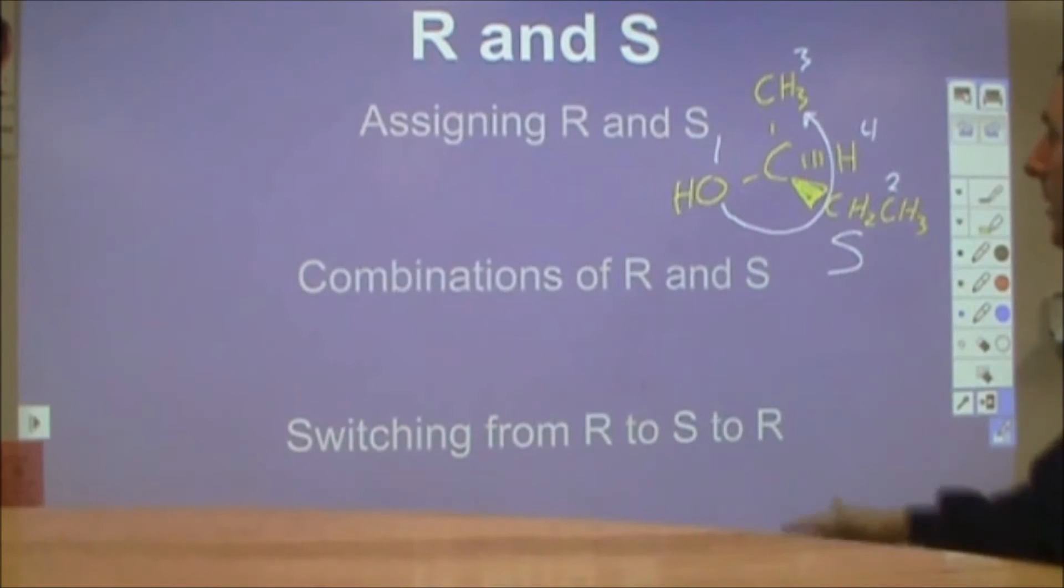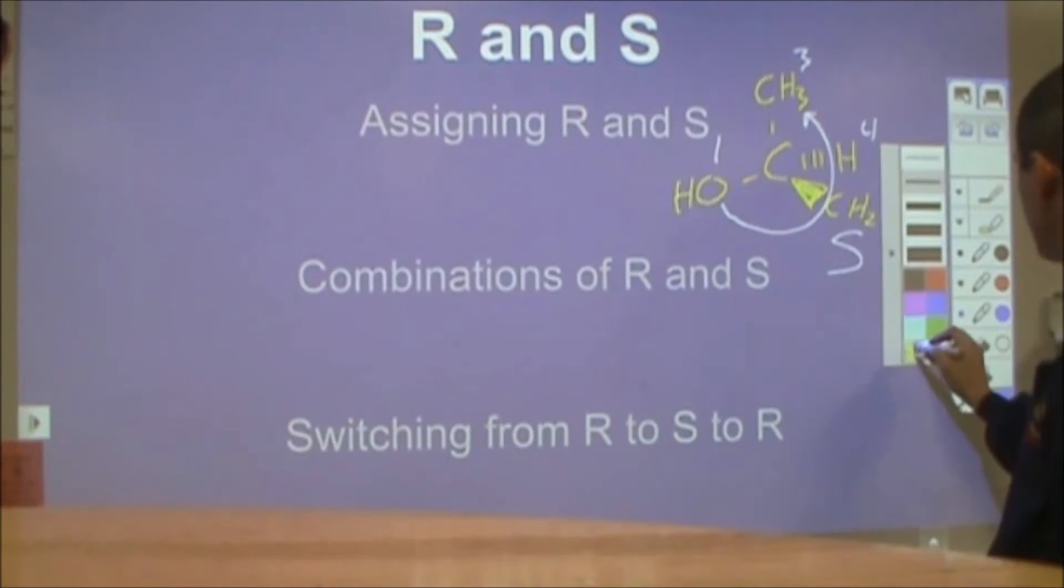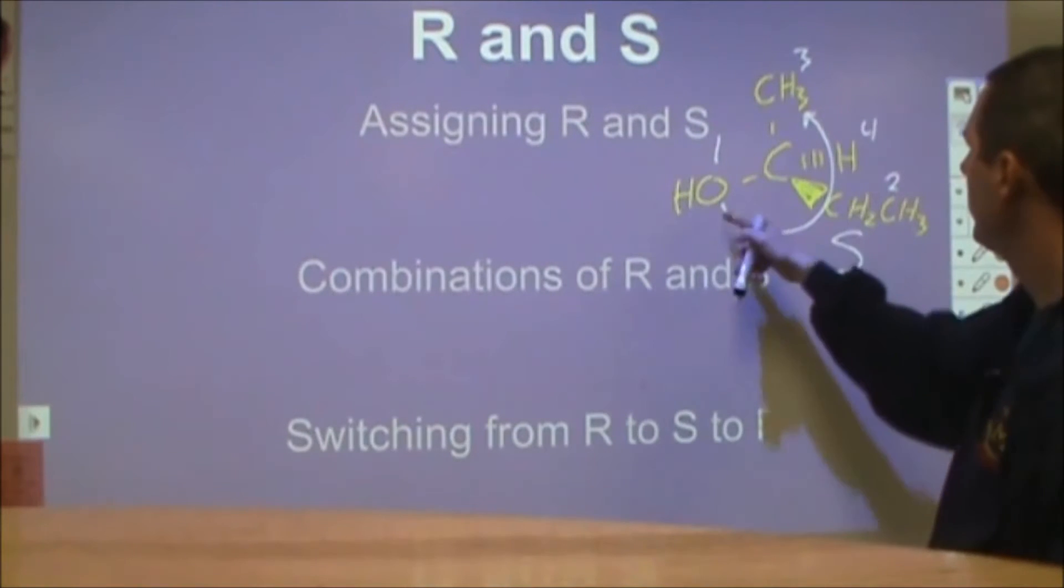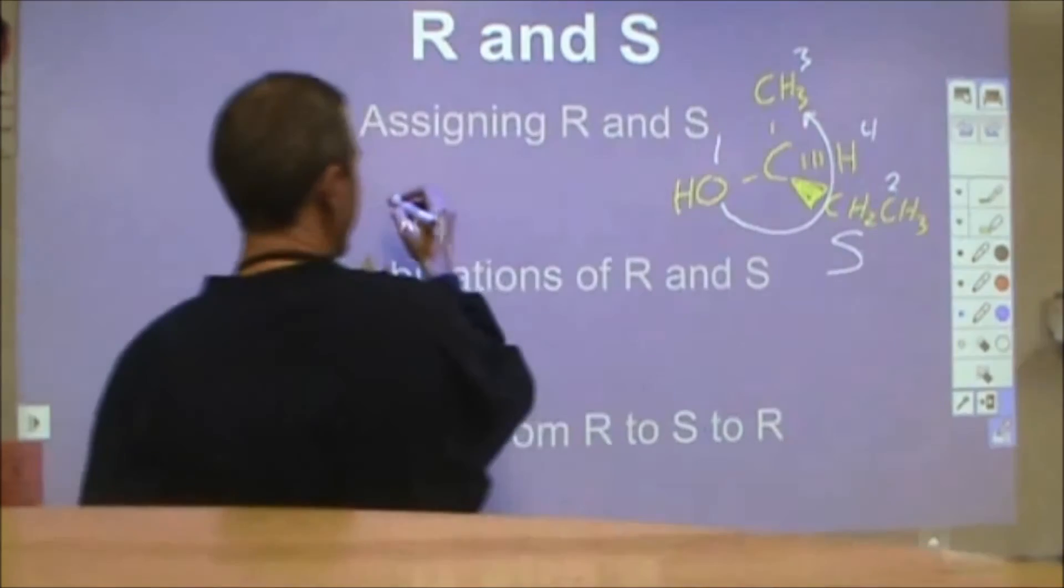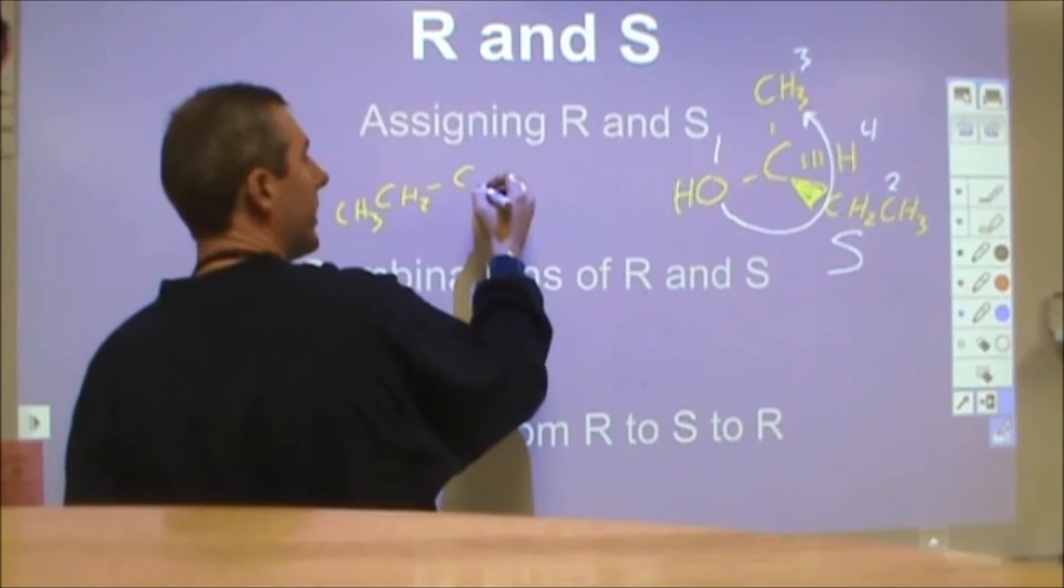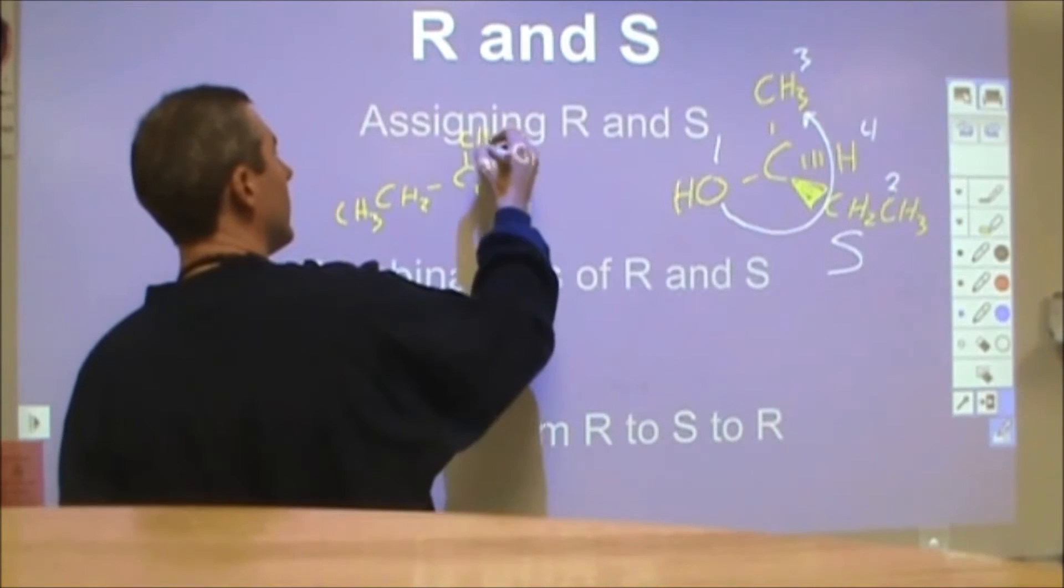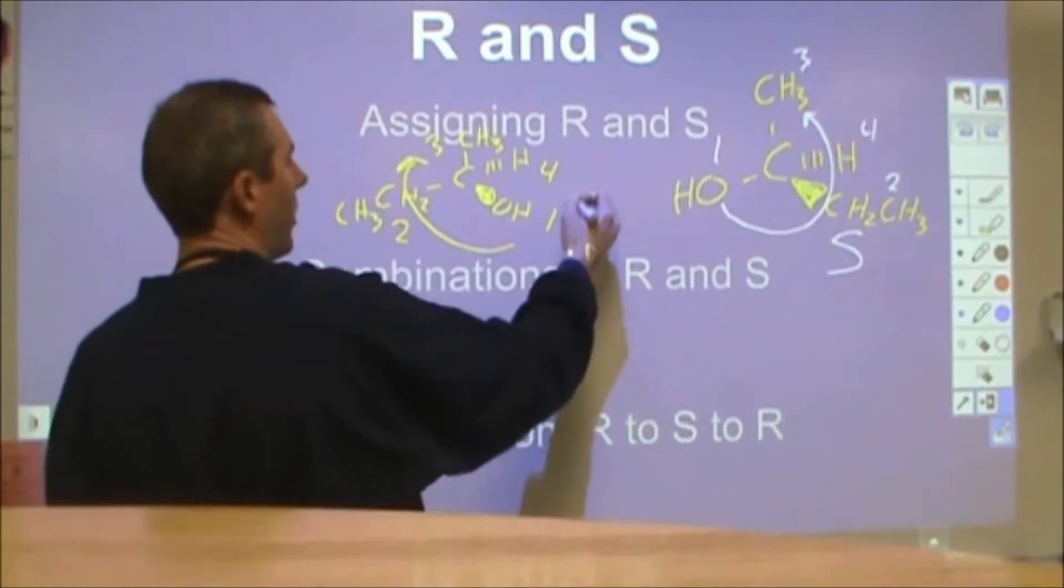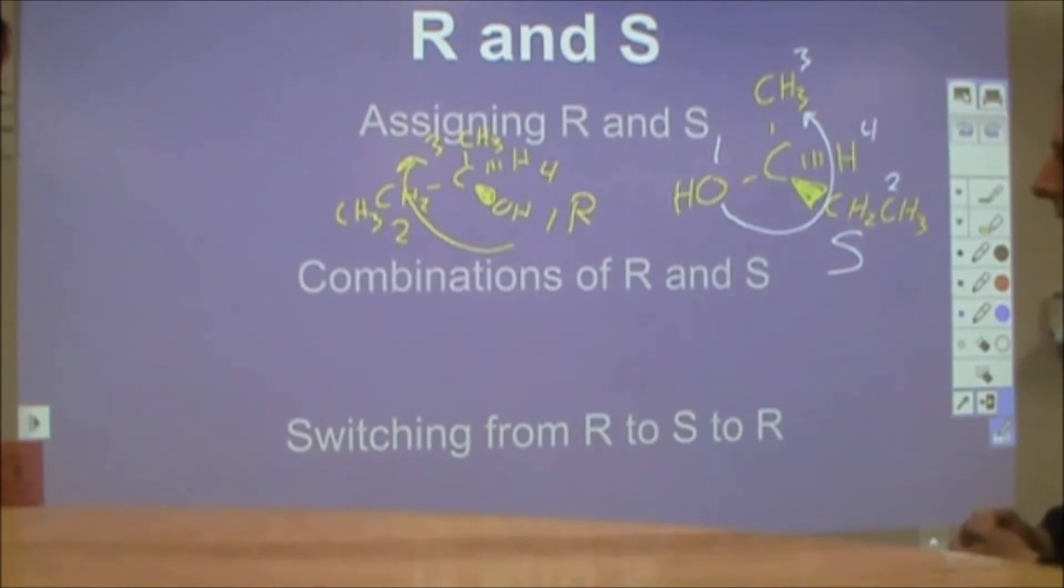Now something that can be really helpful is that if you take two of these groups and you change their places, if I flip flop the hydrogen with the ethyl or the ethyl with the hydroxyl group, that will automatically change R to S or S to R. So if I were to redraw this with the ethyl group here and the hydroxyl group here, now I'm looking at four, one, two, three. Now I'm looking at an R configuration. So just by changing any two, you'll change your conformation from R to S or S to R.